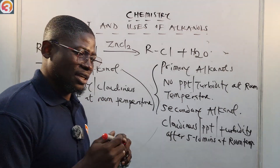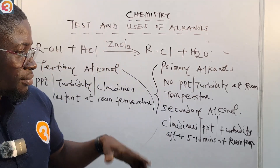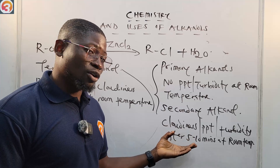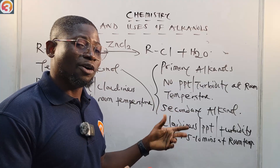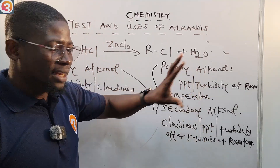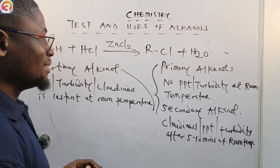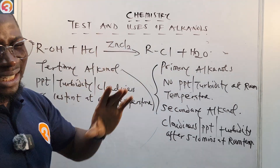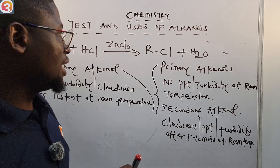In an exam question, they may ask: in the Lucas test for secondary alkanols, what is observed? The answer is cloudiness observed within five to ten minutes. For primary alkanols, no cloudiness at all and no turbidity at room temperature — because primary alkanols do not react to form haloalkanes under these conditions.